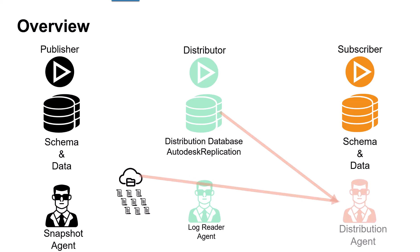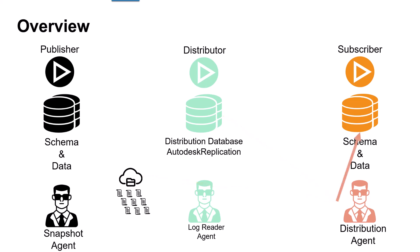The distribution agent copies the initial snapshot from the snapshot folder and then the newer transactions held in the distribution database tables, and applies them to the subscribers. Incremental changes made at the publisher flow to subscribers according to the schedule of the distribution agent, which can run continuously for minimal latency or at scheduled intervals. Autodesk Vault is configured to run continuously. Because changes to the data must be made at the publisher, update conflicts are avoided, and all subscribers are guaranteed to contain the same values as the publisher.